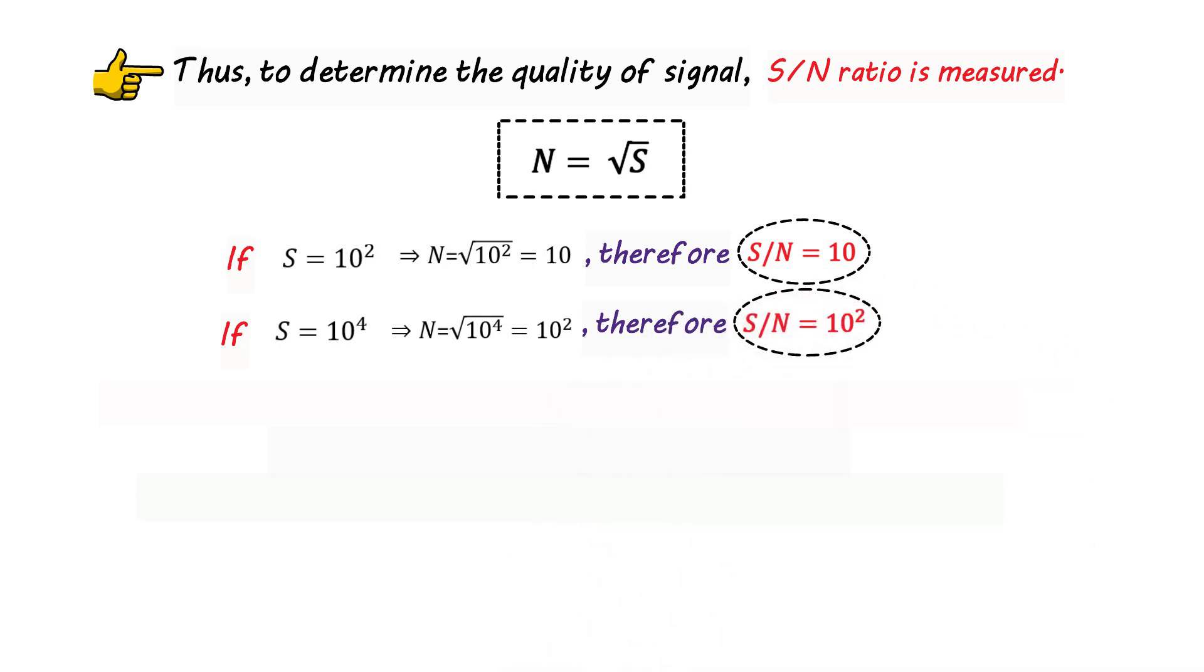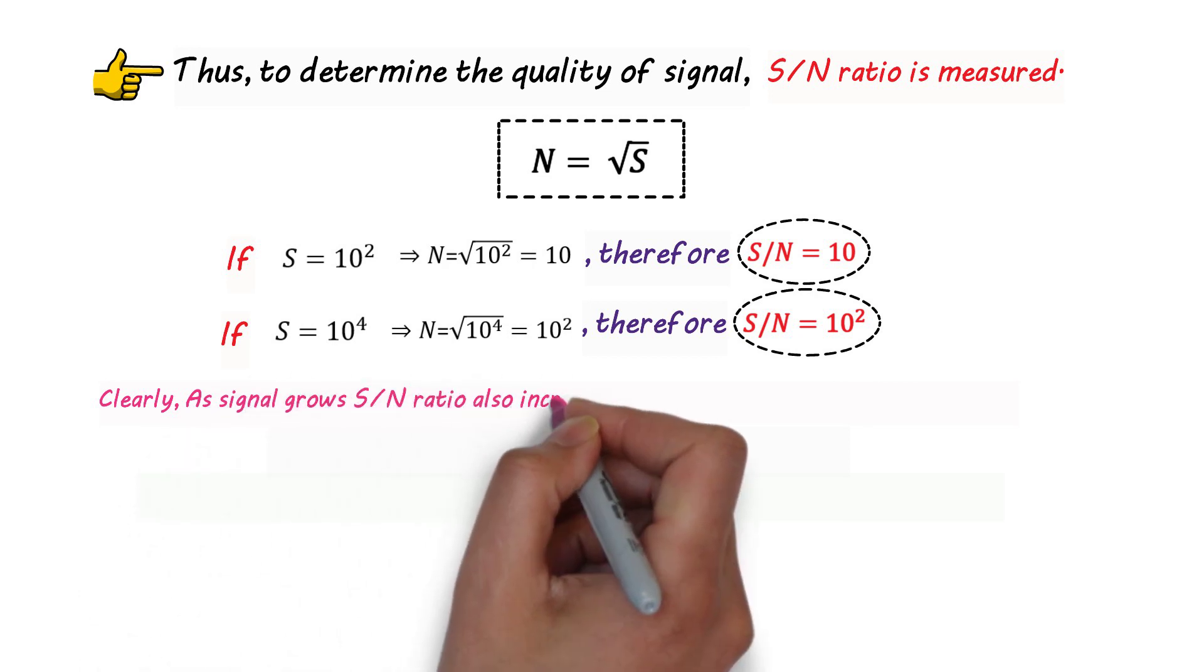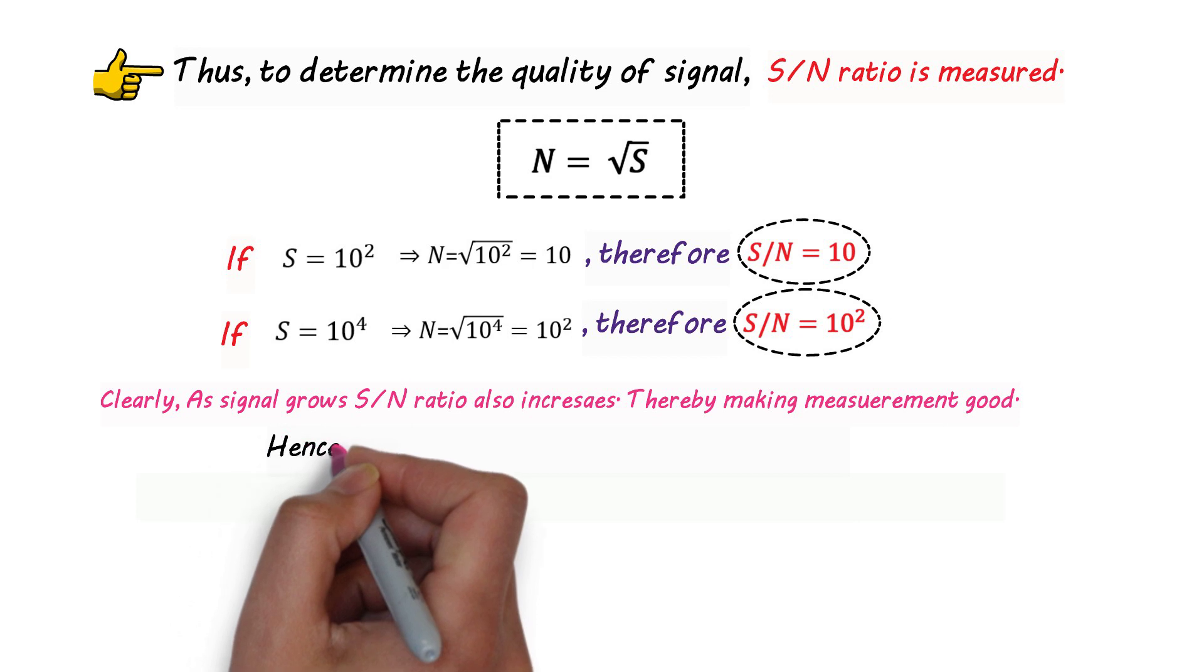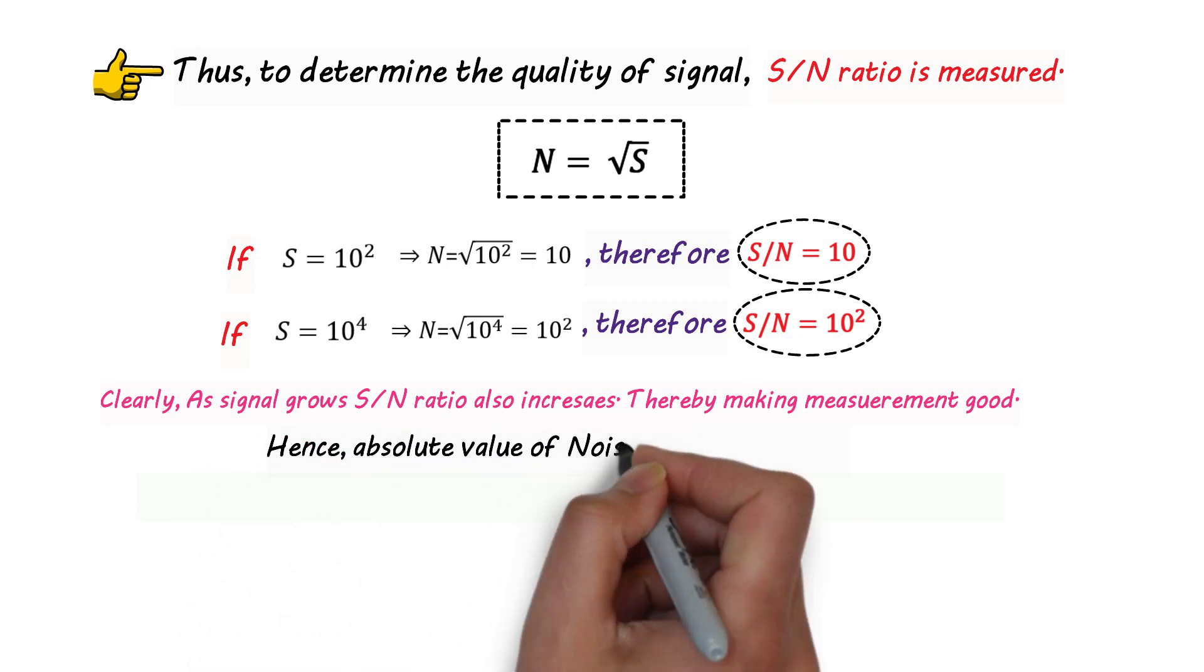Clearly, as signal grows, signal to noise ratio also increases, thereby making measurement good. Therefore, the absolute value of noise is not important.